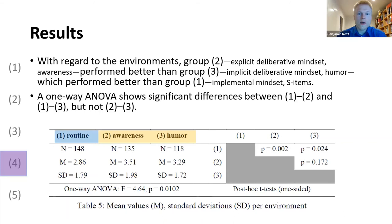A one-way analysis of variance shows that the differences between the two deliberative mindset groups are non-significant, but both are significantly different from the implemental mindset group.